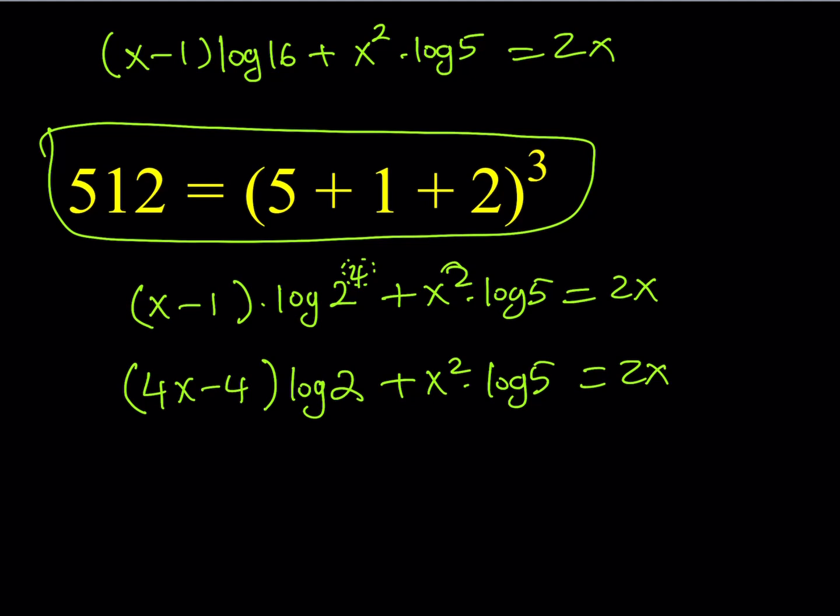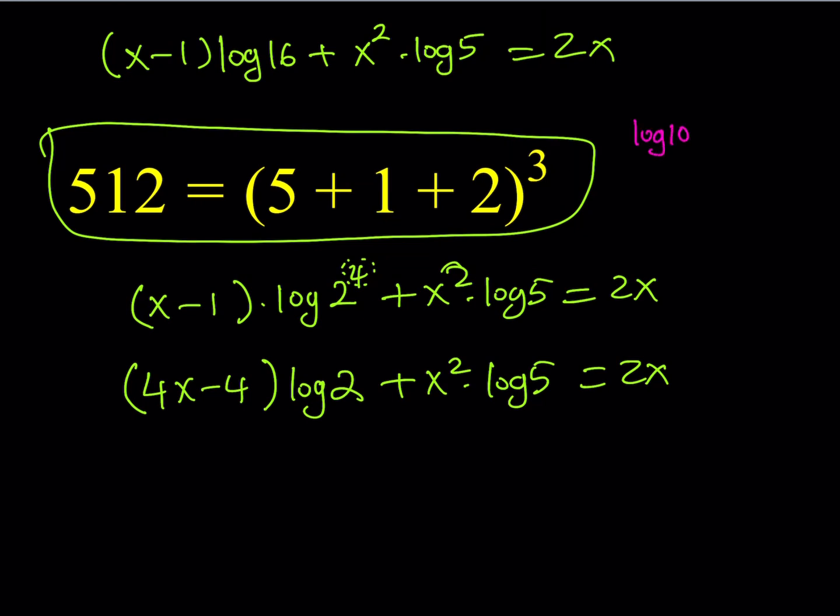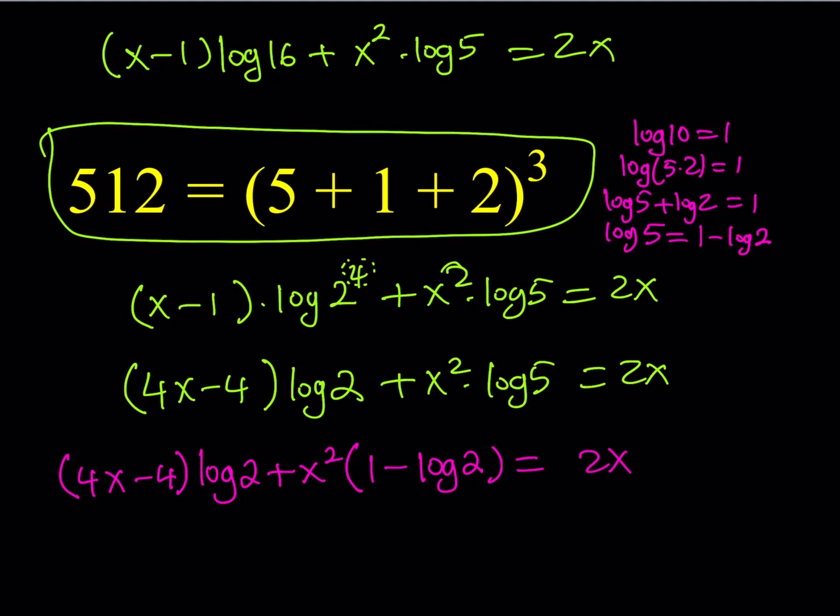Now, this 4 can definitely be moved because that's the exponent of a log something. So I can move it to the front. That's going to be (4x-4)log 2 + x² log 5 is equal to 2x. Now, what I'd like to do is associate log 5 and log 2. Here's one thing you need to remember: Log 10 equals 1 because we're working in base 10. But I can write log 10 as log(5·2) = 1. And then by using the product rule, I can separate these: log 5 + log 2 = 1. So log 5 and log 2 are two quantities whose sum equals 1, which means I can write log 5 as 1 - log 2. Beautiful.